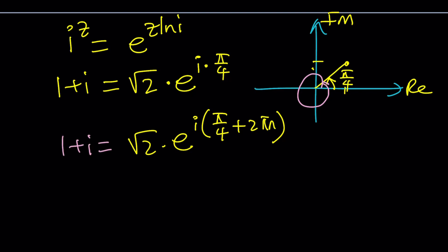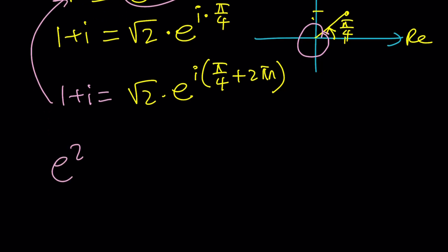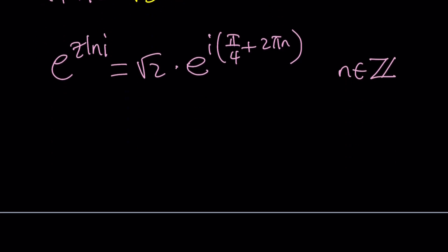But 1 plus i at the same time is equal to i to the power z, which is this. So we get e to the power z ln i, which is i to the power z, equals square root of 2 times e to the power i times pi over 4 plus 2 pi n. And n is an integer, positive or negative, doesn't matter. Infinitely many values.